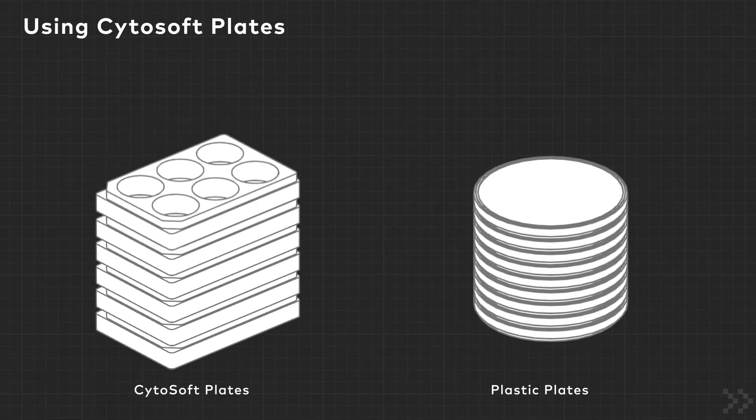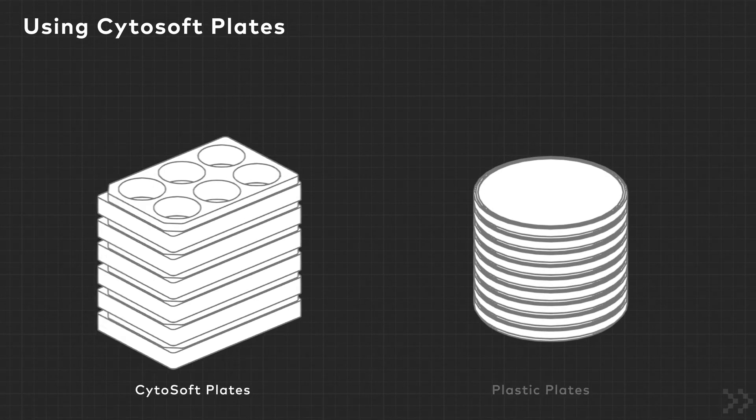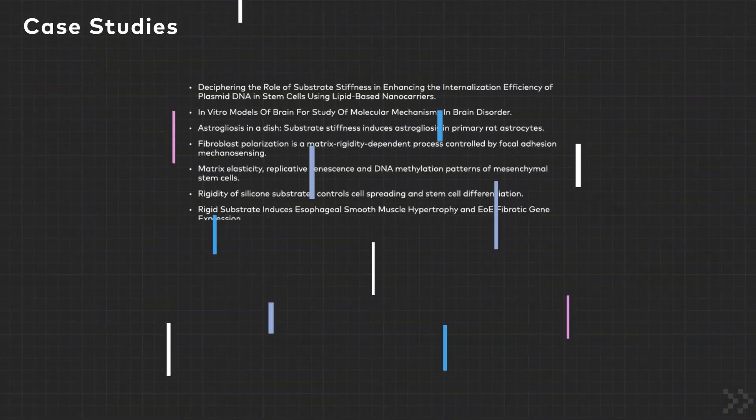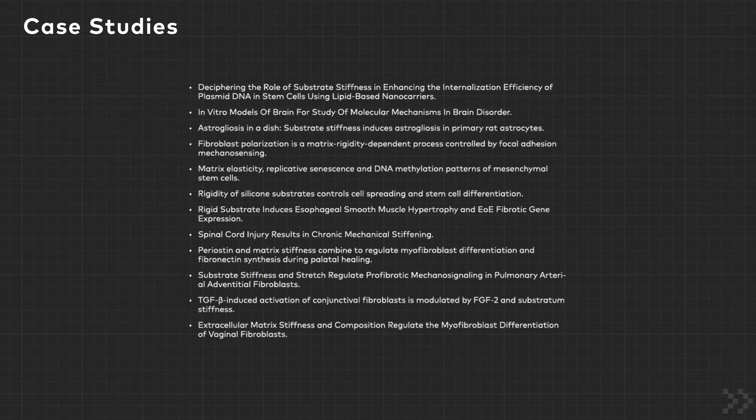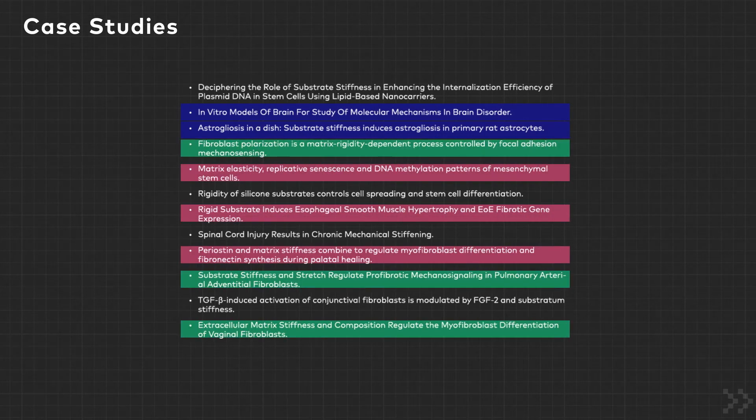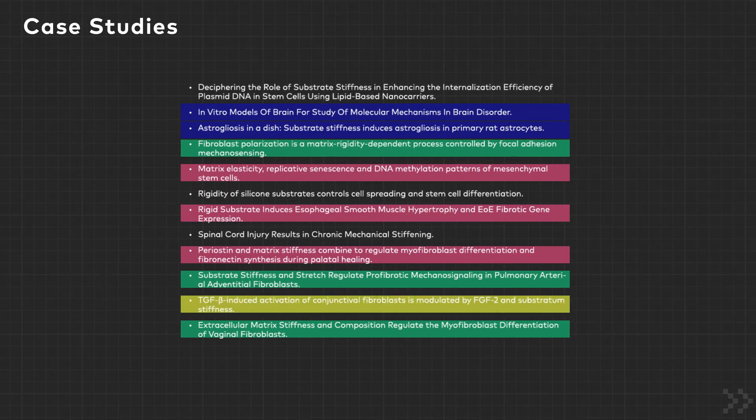After seeing how your cells grow on the optimal stiffness, there's no reason to go back to hard plastic plates again. Cytosoft plates have been foundational in over 30 publications. They include tissue types from brain tissue to muscle tissue to fibroblast studies, and Cytosoft plates have been instrumental to discovering certain mechanisms of mechanotransduction.